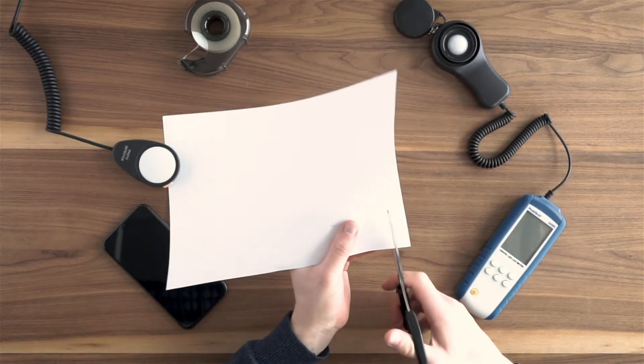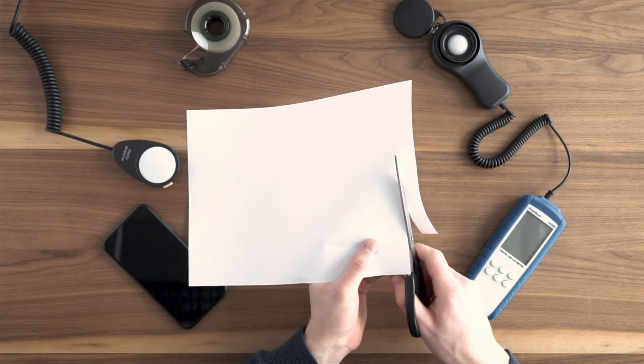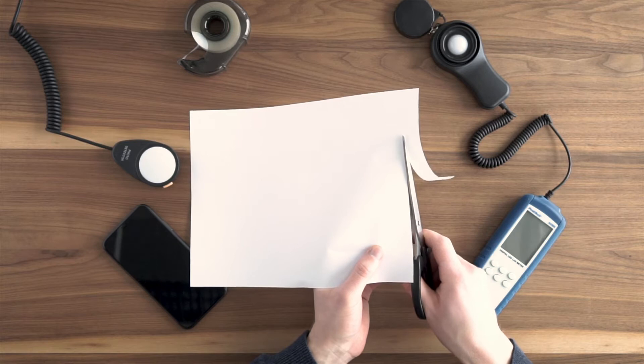First, cut the paper into a small strip that is long enough to reach around your phone. A width of one to two centimeters, or about half an inch, is sufficient and works best.